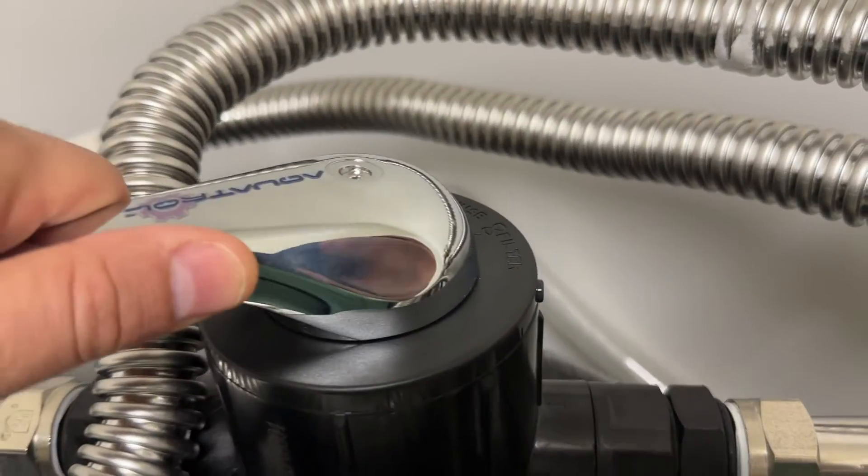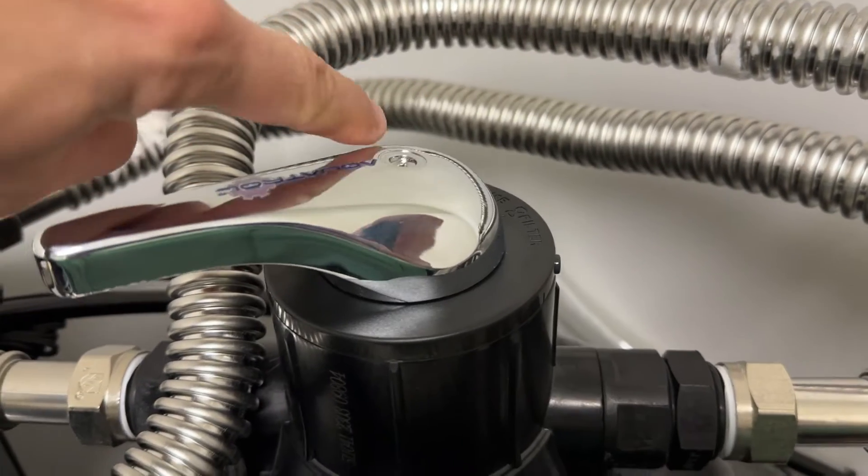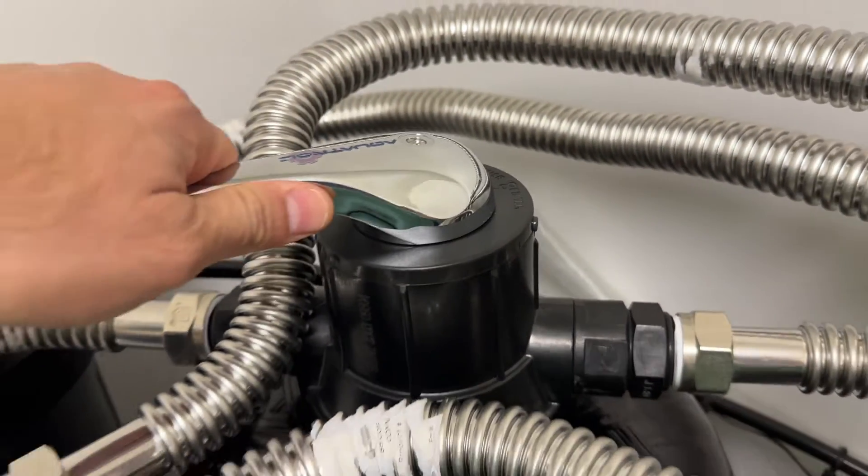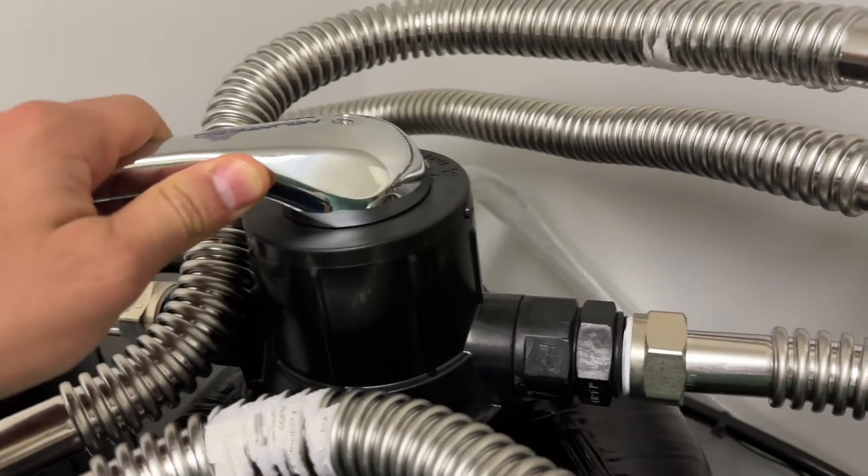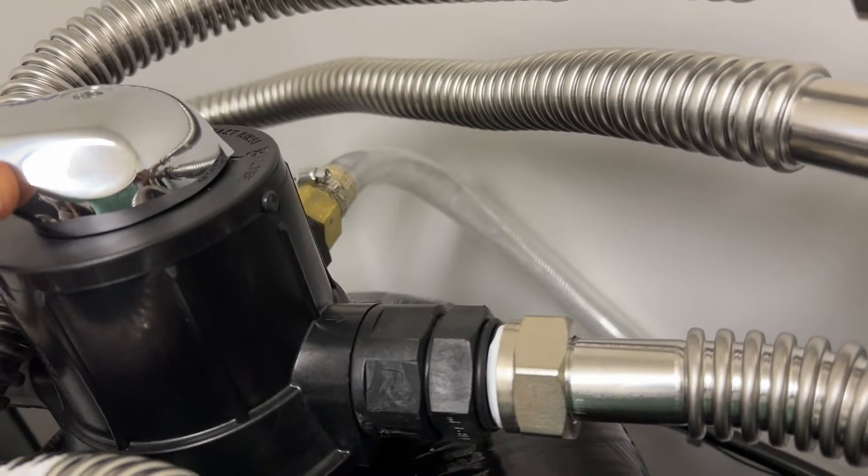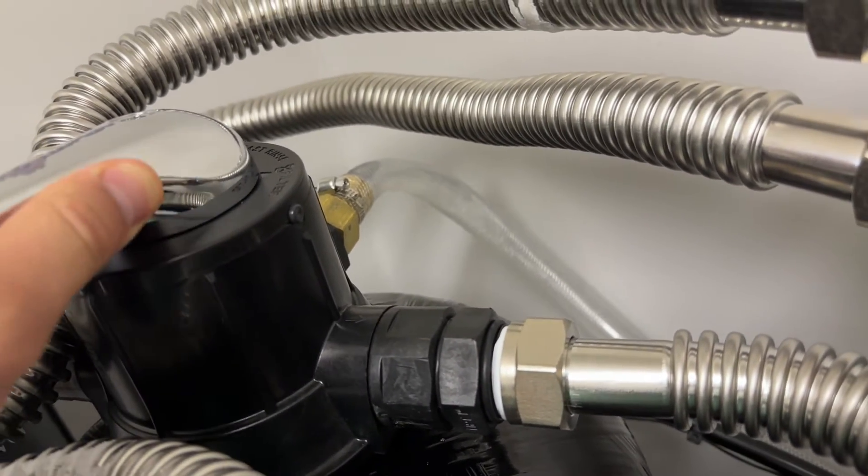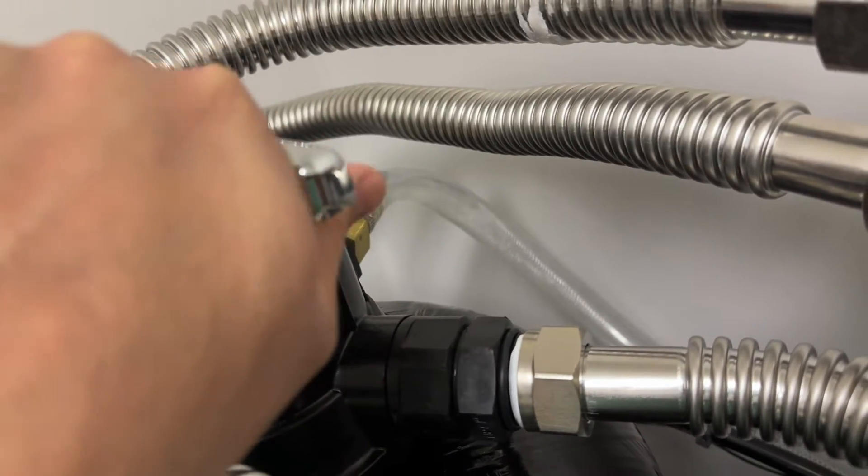First thing we want to do is move this lever over two clicks so past fast rinse and then over to backwash and while we do that we're going to watch the fluid coming out. That's fast rinse and that's backwash.